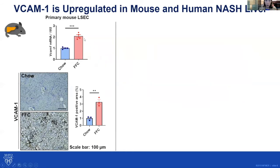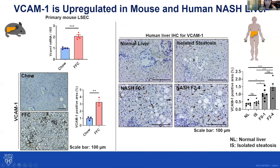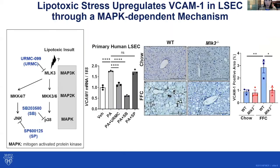To validate this result, we showed significant upregulation of VCAM1 in the FFC-fed mice compared to the chow-fed mice at both the mRNA level and the protein level. Interestingly, NASH patients had a significant increase in hepatic VCAM1 expression compared to those with normal liver or isolated steatosis, validating the human relevance of our observation.